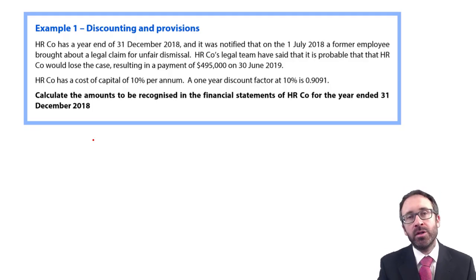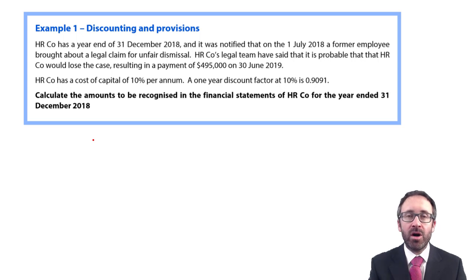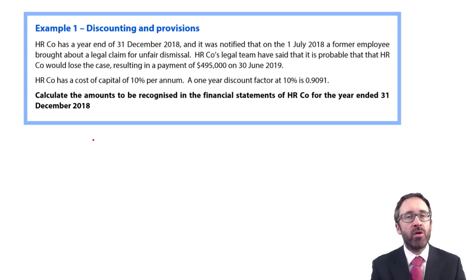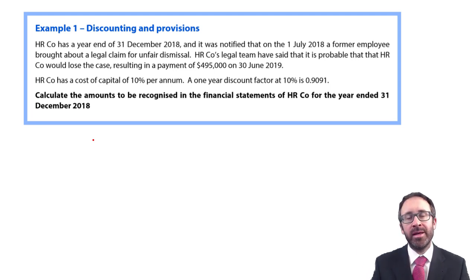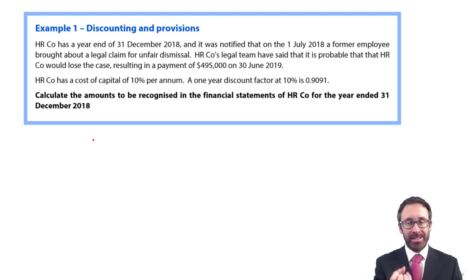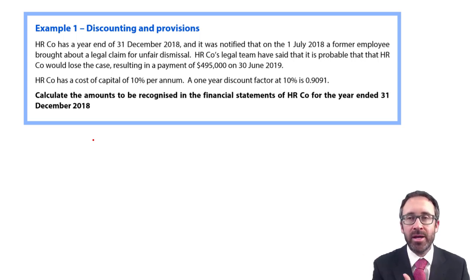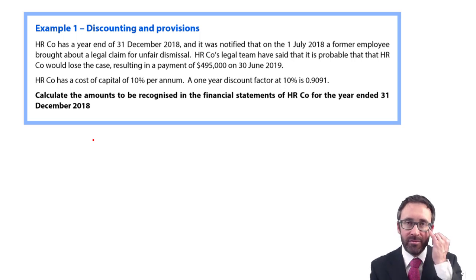Let's continue our journey looking at the measurement of provisions under IAS 37. We've gone through and looked at the best estimate of the expenditure, but what happens if that provision is settled at a date in the future, meaning that in today's present value terms it is materially different? If that's the case, we need to recognize the provision at its present value.